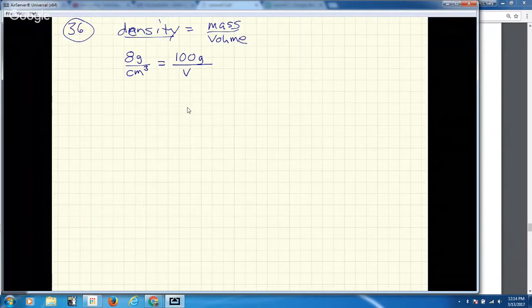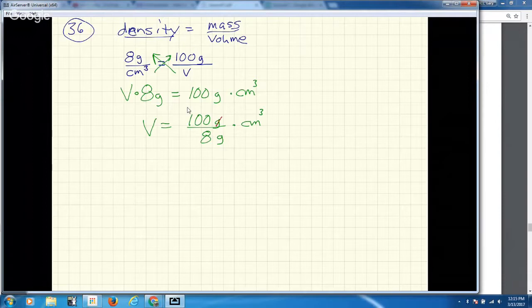Here we could consider a little cross-multiplying and dividing. We're going to get V times 8 grams is equal to 100 grams times centimeters cubed. We want to get the volume alone so we'll divide the 8 grams over. Volume in this case is 100 grams divided by 8 grams times centimeter cubed. I kept the units in here just to demonstrate that the grams will divide out leaving centimeters cubed which is a unit of volume. Let's see how many times does 8 go into 100. What I get is 12.5 centimeters cubed. This is the volume of my solid steel ball.